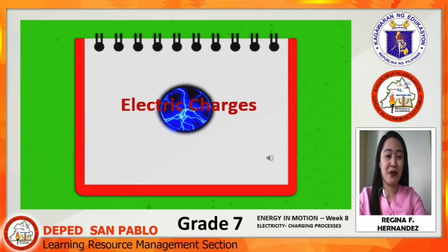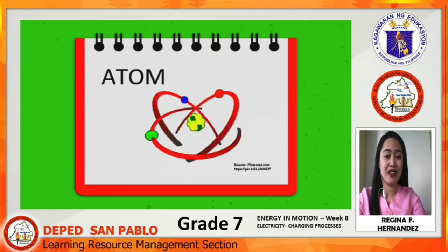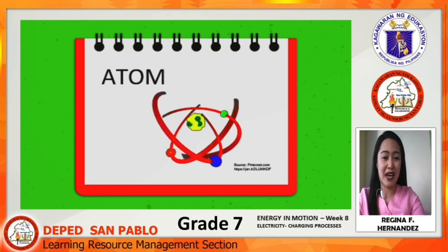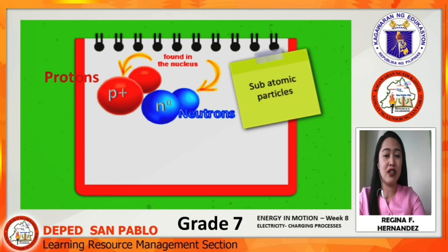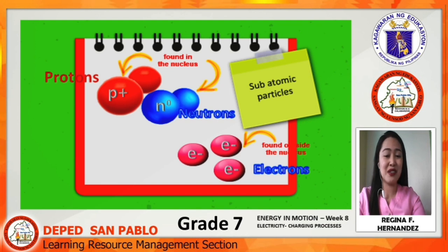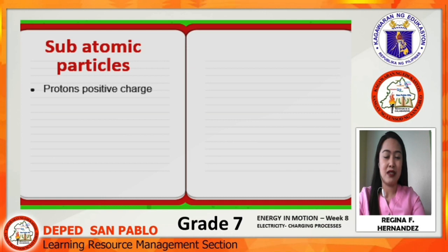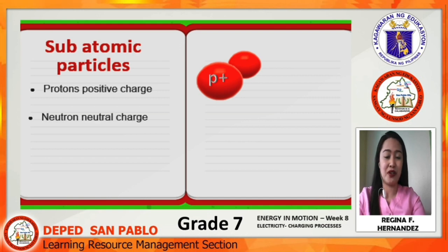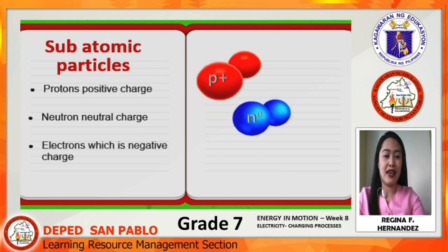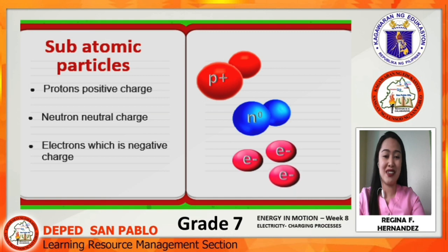Let us tackle first electric charges. All of us in this world are made up of atoms, and atoms have subatomic particles, which are the protons, the neutrons found in the nucleus, and the electrons which are located outside the nucleus. The protons are the positively charged particles of an atom, while the neutron has no charge — it is neutral — and the electrons are negatively charged.